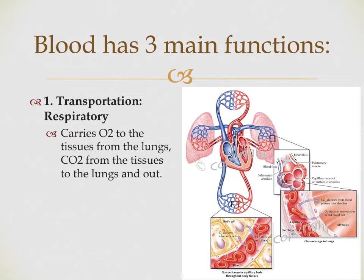Let's talk about the three main functions of blood. Function number one is transportation — probably what we think of most often. This includes transportation of nutrients, oxygen, and waste products. Specifically relating to the respiratory system: carrying oxygen from the lungs to the tissues, and carrying carbon dioxide from the tissues back to the lungs. Oxygen is used in the production of ATP, adenosine triphosphate, for cellular energy.